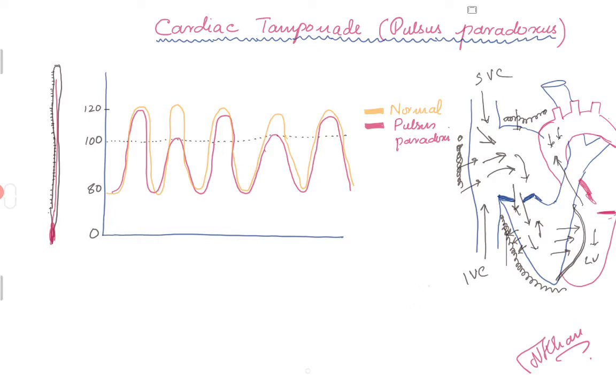The classic Beck's triad that we all know is falling BP, rising JVP, and muffled heart sounds. One can question why does this not happen in restrictive cardiomyopathy, because the physiology is the same. The myocardium is all thickened and it's not relaxing, but you have to know it's a global infiltrative disease.